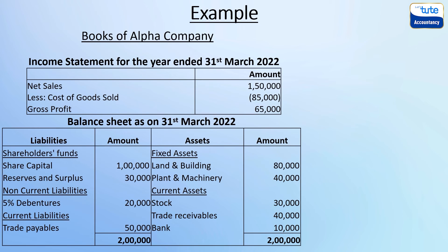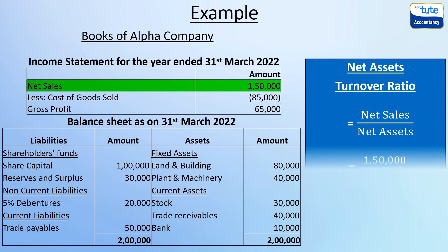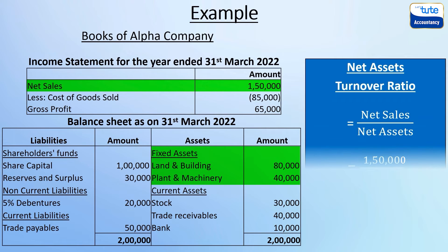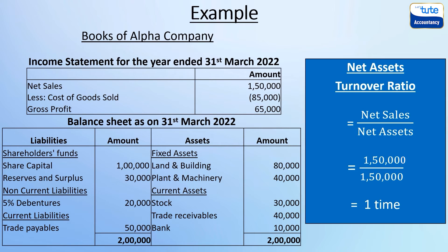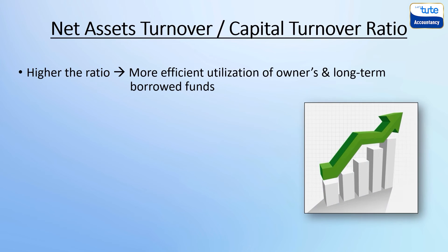It is also a general measure of the level of capital investment required in an industry to generate sales. Using the same example, net sales are 1,50,000 and net assets — calculated as fixed assets plus current assets minus current liabilities — amount to 1,50,000. Capital employed also equals 1,50,000. The net assets turnover ratio comes to 1. A higher ratio indicates more efficient utilization of owners' and long-term borrowed funds.